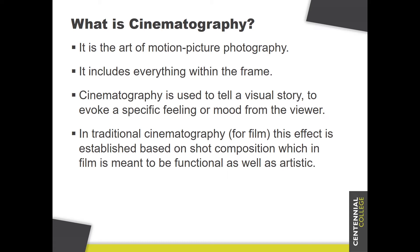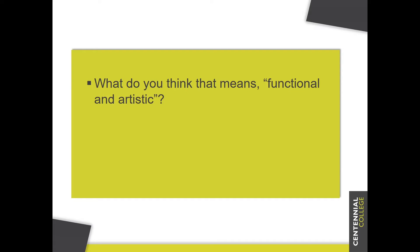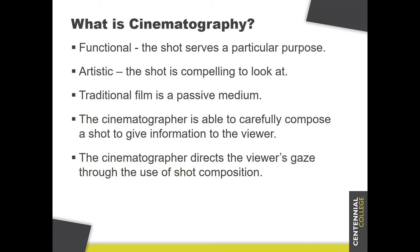Every single shot within a film or within a game is supposed to be both functional and artistic. It's supposed to do something and evoke some type of mood or feeling. Functional means the shot serves a particular purpose — it's there for some reason. Regardless of whether we're talking about film or game, you have to understand why you are including a particular camera or a particular shot within your scene. Is it supposed to give information? Is it supposed to set the scene? Understanding the functionality of that shot goes a long way in helping you create it properly.